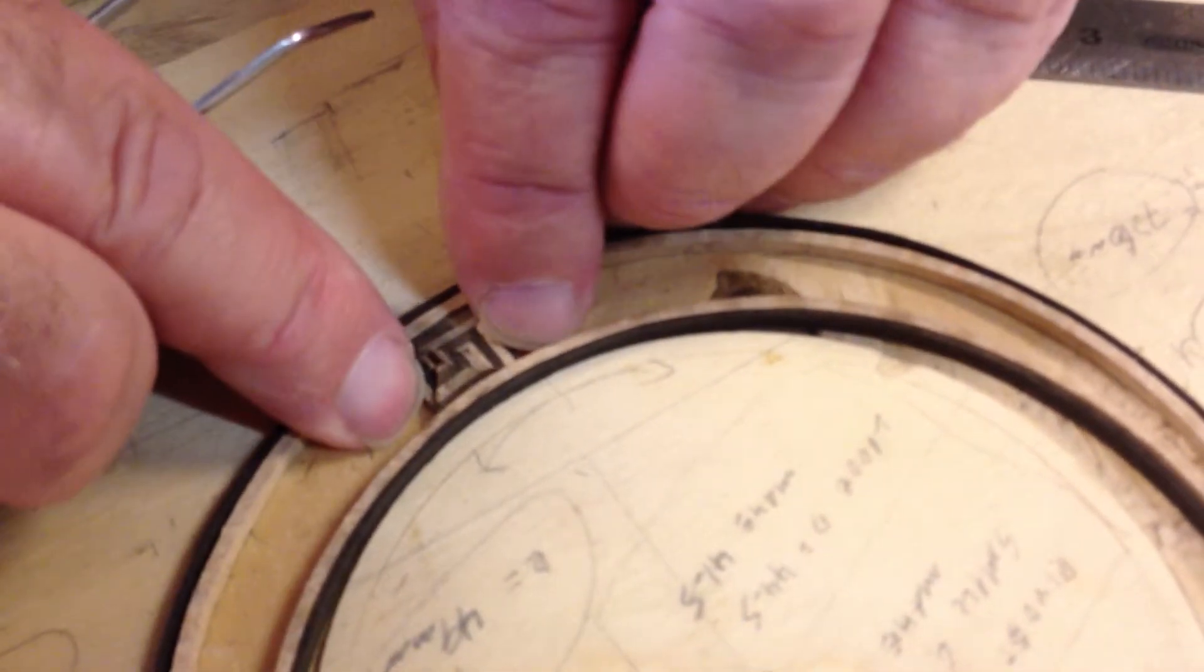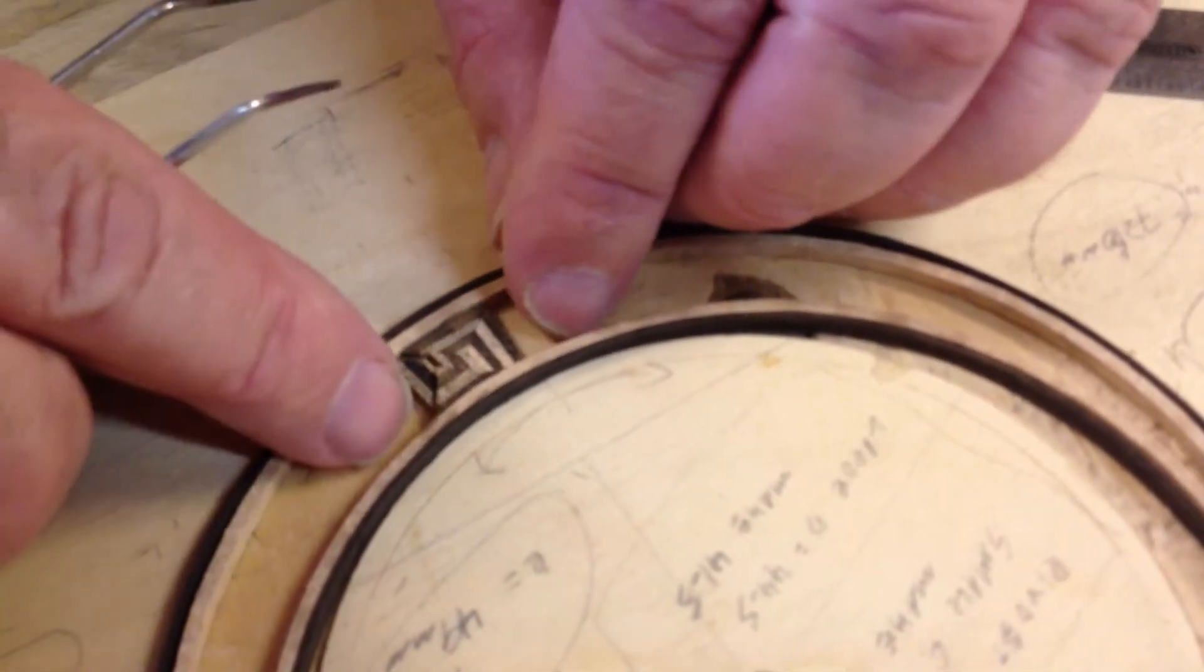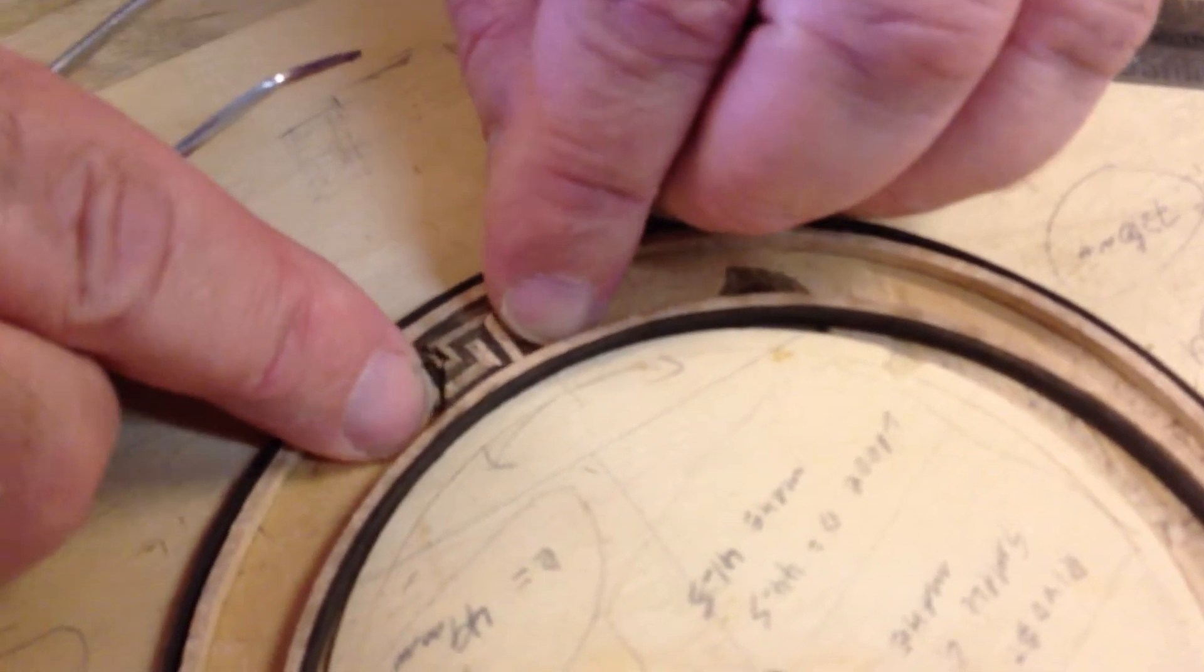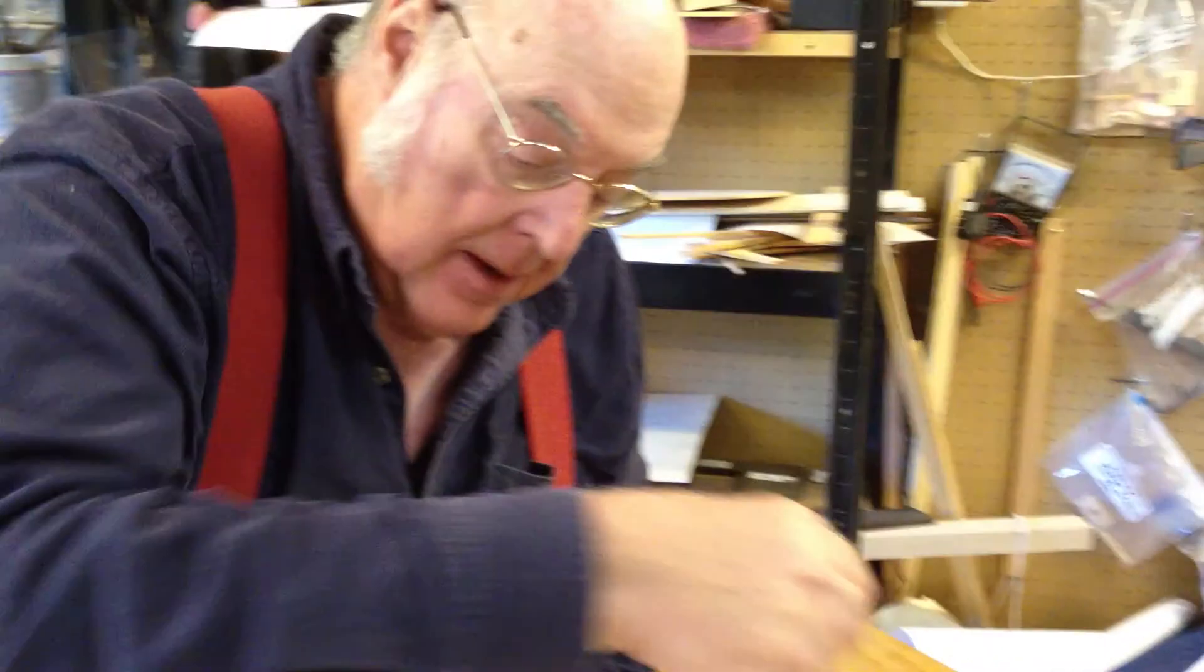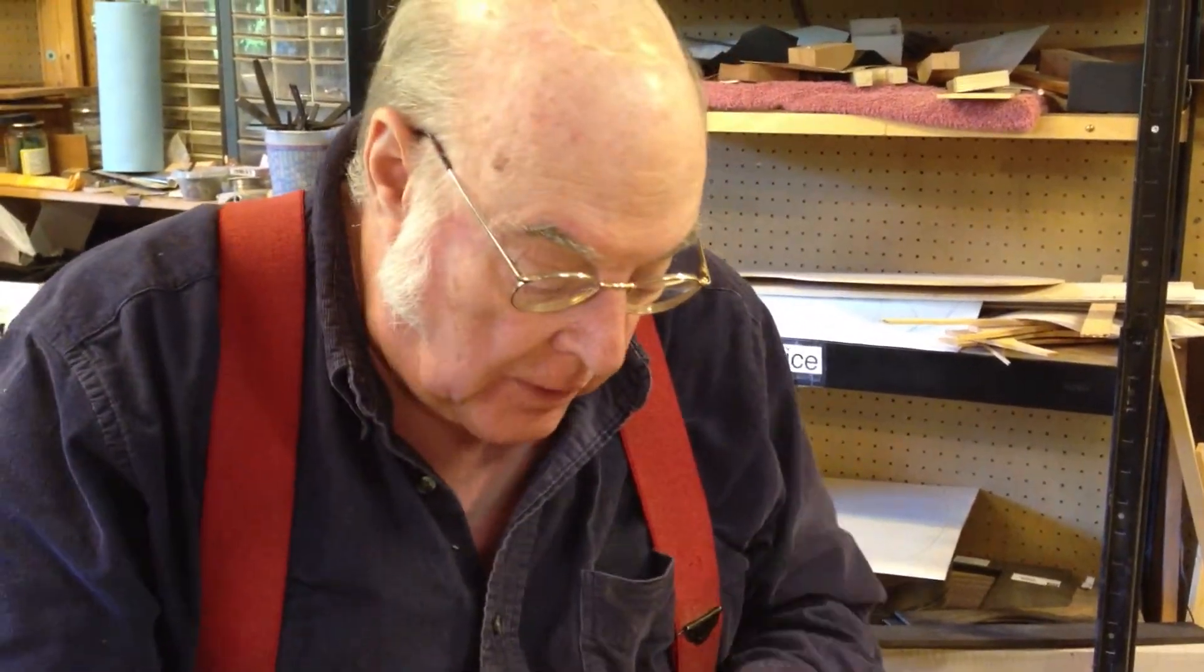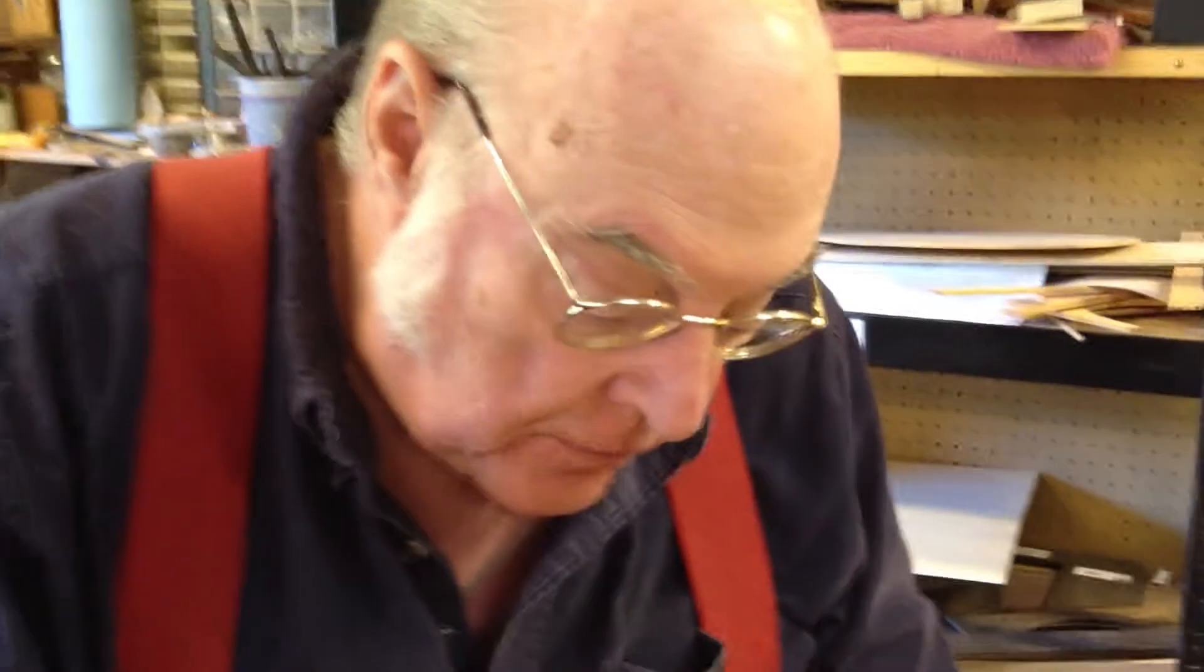And there we have a single repetition of the Greek key pattern. The next part of the pattern simply repeats those four pieces. So I'll do this quickly so you can see two repetitions.